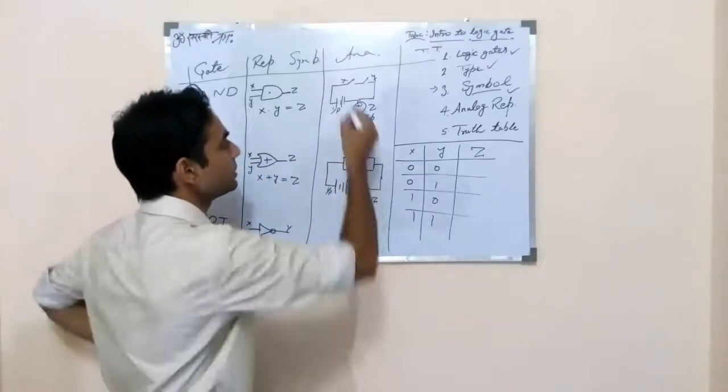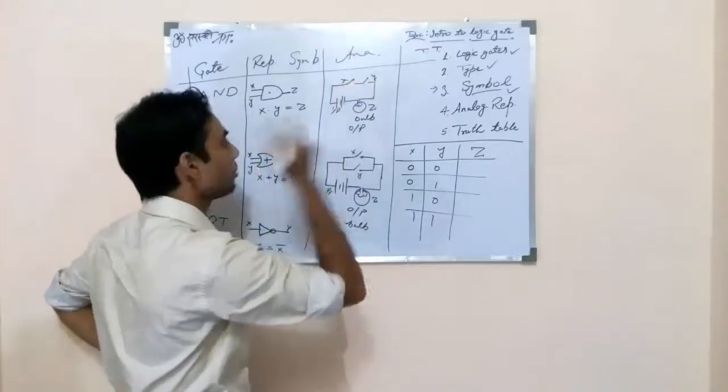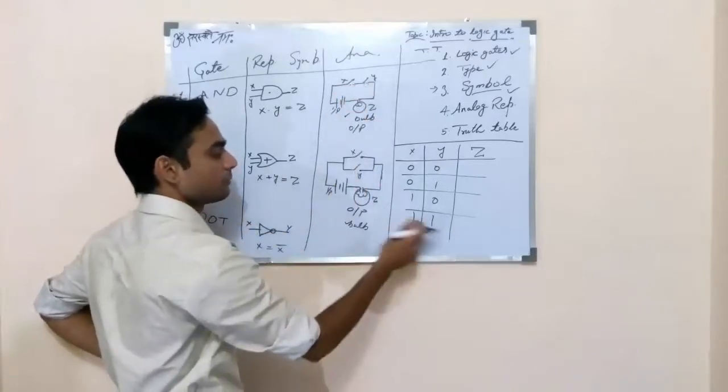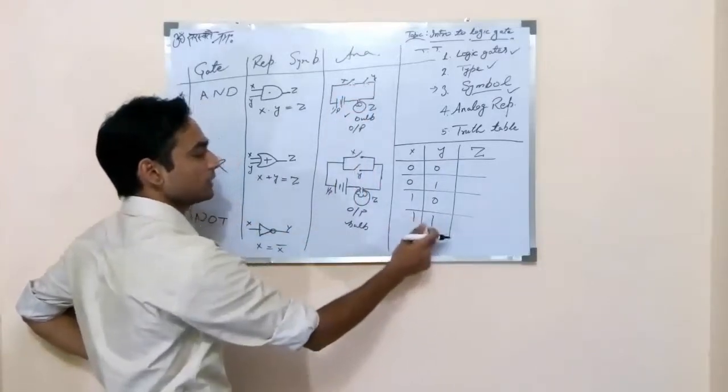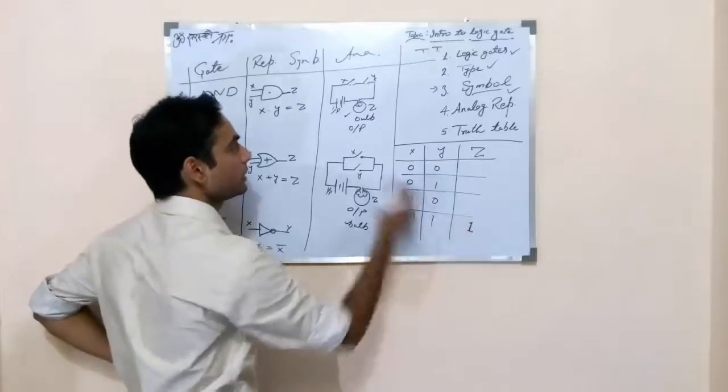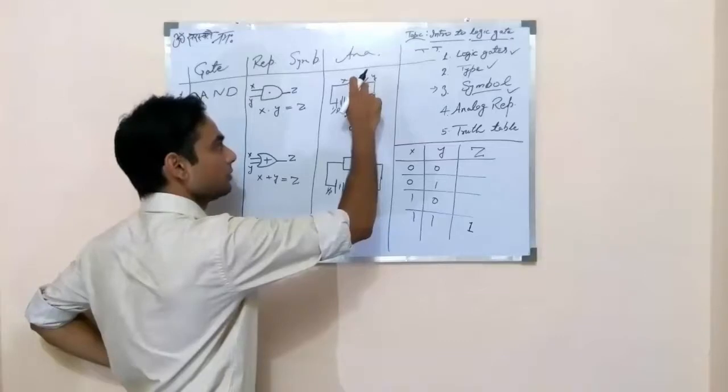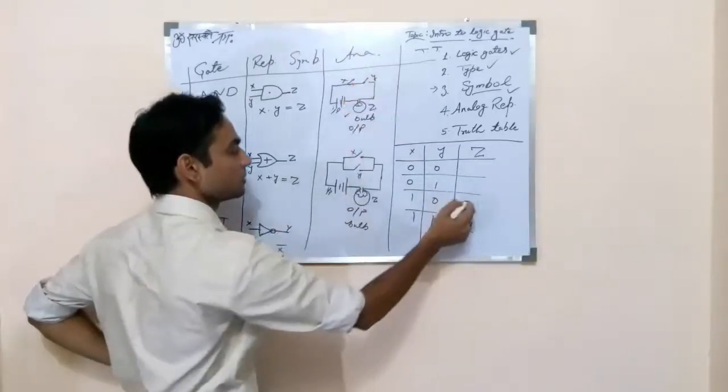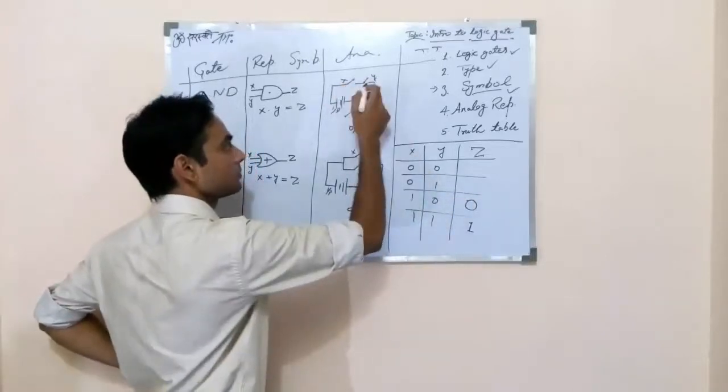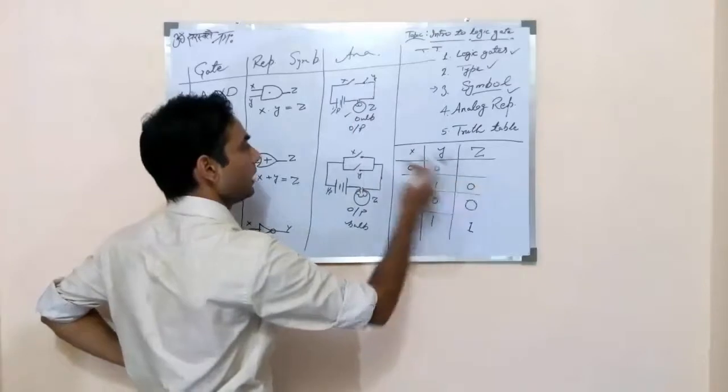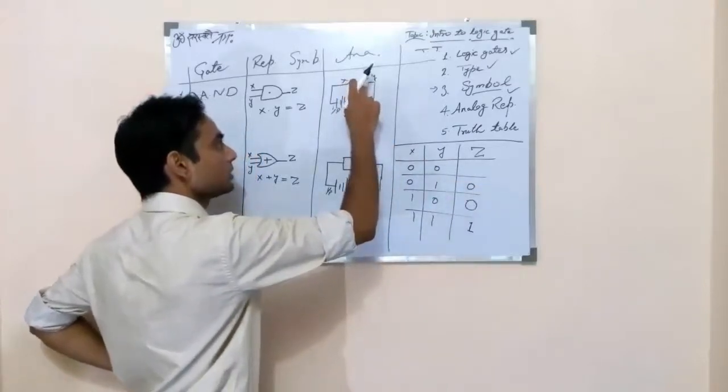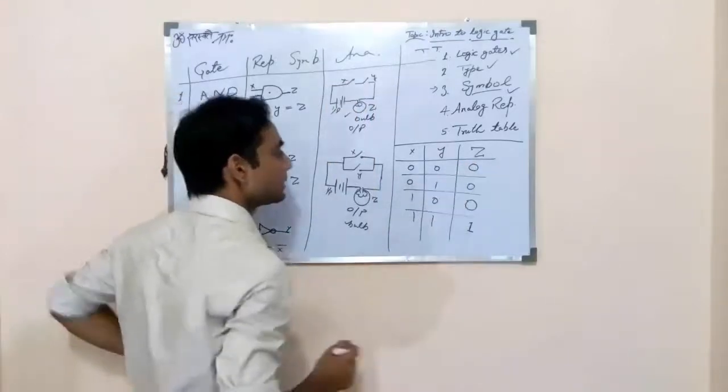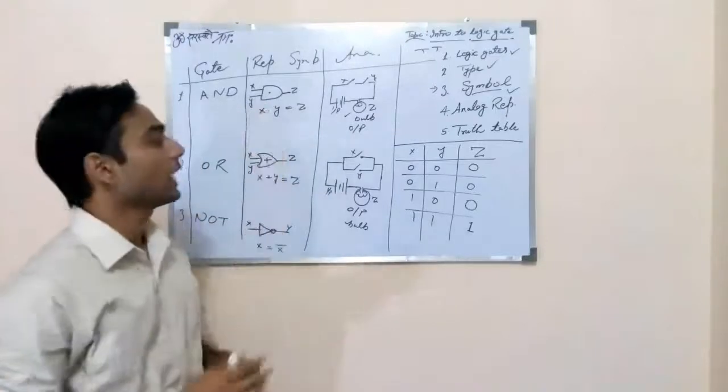This is bulb which shows the output of a particular gate. So if we use, these are the buttons. If we turn on both buttons, then bulb glows it means 1. If we use only one button then bulb does not glow. Same here. Bulb not glow. And if we not open any button then bulb not glow. This is the truth table of AND gate.